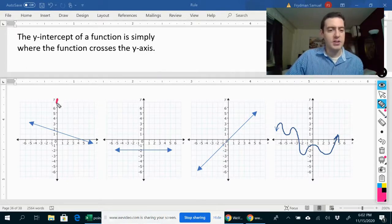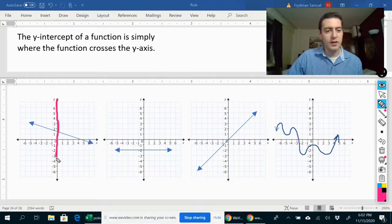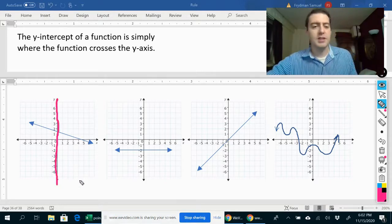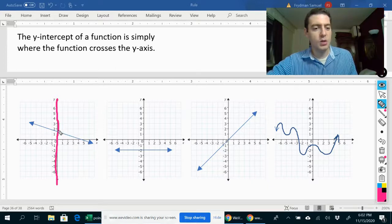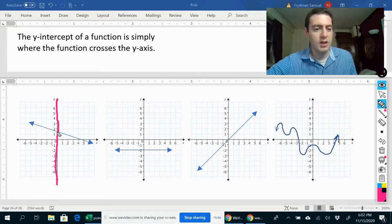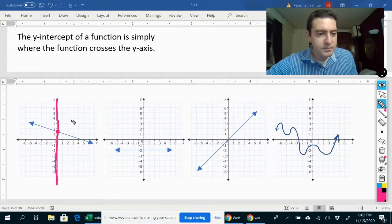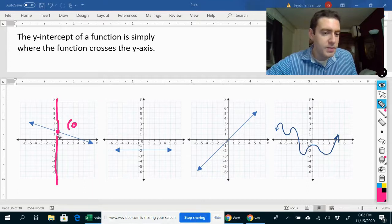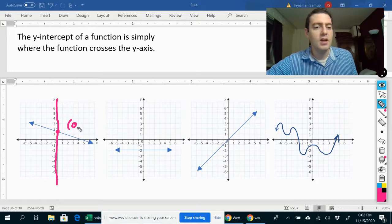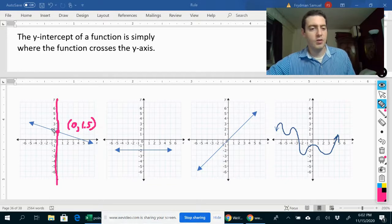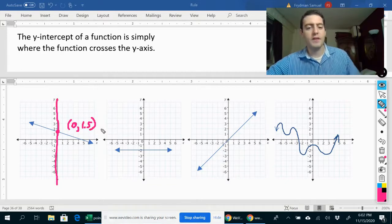Remember, the y-axis is just this vertical axis over here. The y-intercept is simply where the function crosses the y-axis. So here it crosses right at this point, which seems to be zero, first of all, on the x-axis. And it's right between one and two, right in the middle there on the y-axis. So that would be 1.5. So the y-intercept for this graph is 0, 1.5.